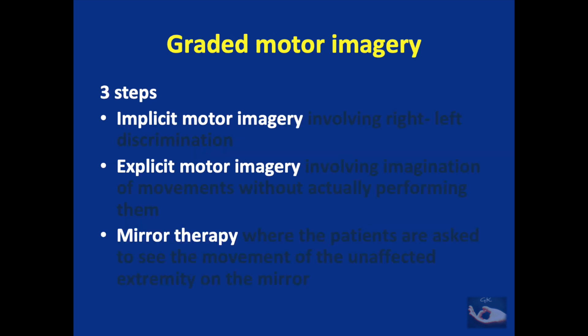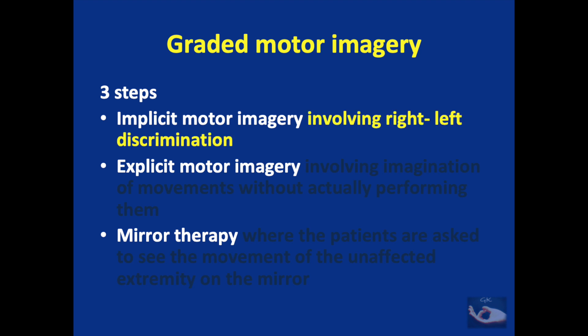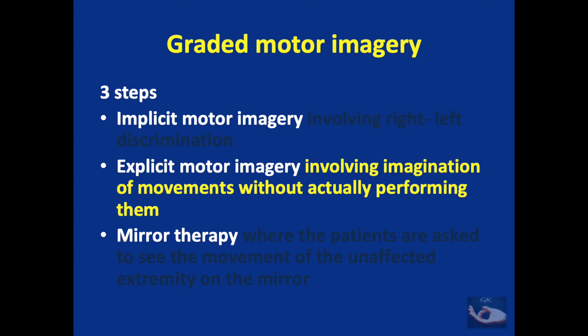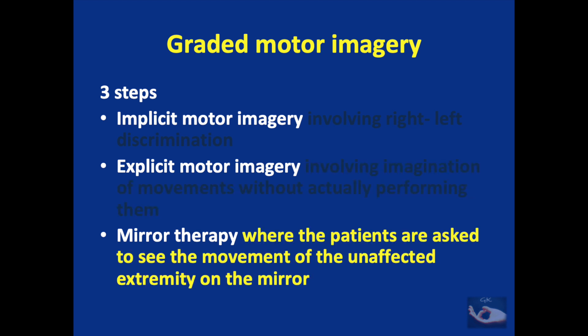All these movements are coordinated with the movement of the donor nerve. To enhance the separation of these two, there are three important steps in graded motor imagery. The first is implicit motor imagery, involving right-left discrimination. Explicit motor imagery involves imagination of movements without actually performing them. Mirror therapy asks patients to observe the movement of the unaffected extremity in a mirror placed in front of them.